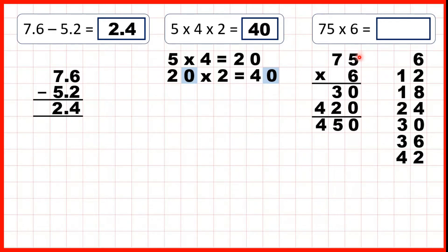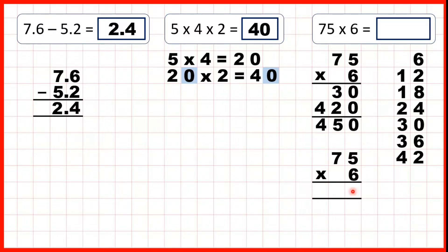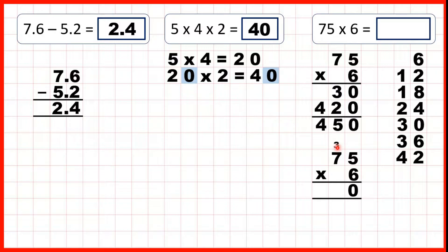We could also use short multiplication here. So, 75 times 6. Again, we start with 5 times 6, which we know is 30. But instead of writing it in the answer line, we can write 30 as 3, 0, with the 3 carried up. Now, 7 times 6 is 42, but we need to add the 3, and 42 plus 3 is 45. So that goes in our answer line. So, 75 times 6 is 450.